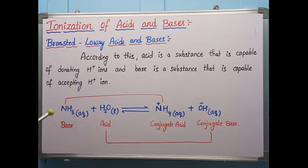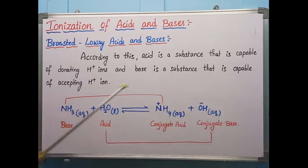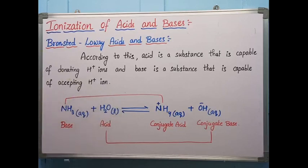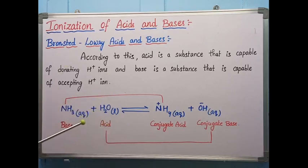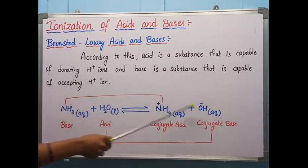By looking at this chemical equation you can understand more clearly. Ammonia (NH3) and water (H2O): when ammonia is added to water it produces ammonium ion along with OH− ion. Here water dissociates into H+ and OH−. Water is giving the H+ ion to ammonia, hence water is called the acid, and ammonia is accepting H+ ions, acting as a proton acceptor, hence it is called the base. Ammonia converts into NH4+ by accepting H+ from water, and H2O by donating a proton converts into OH−.